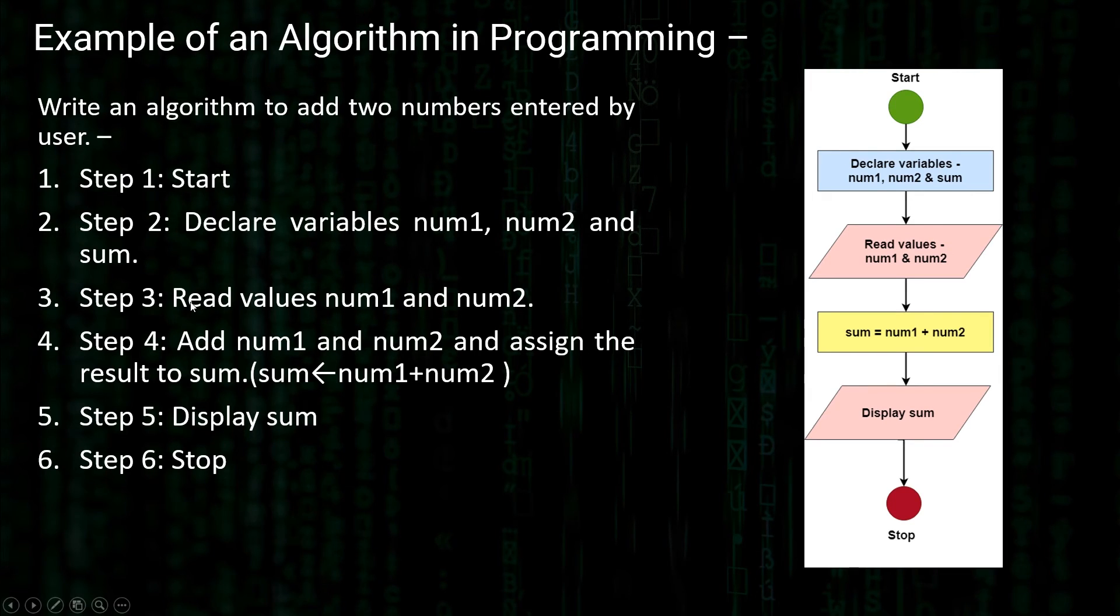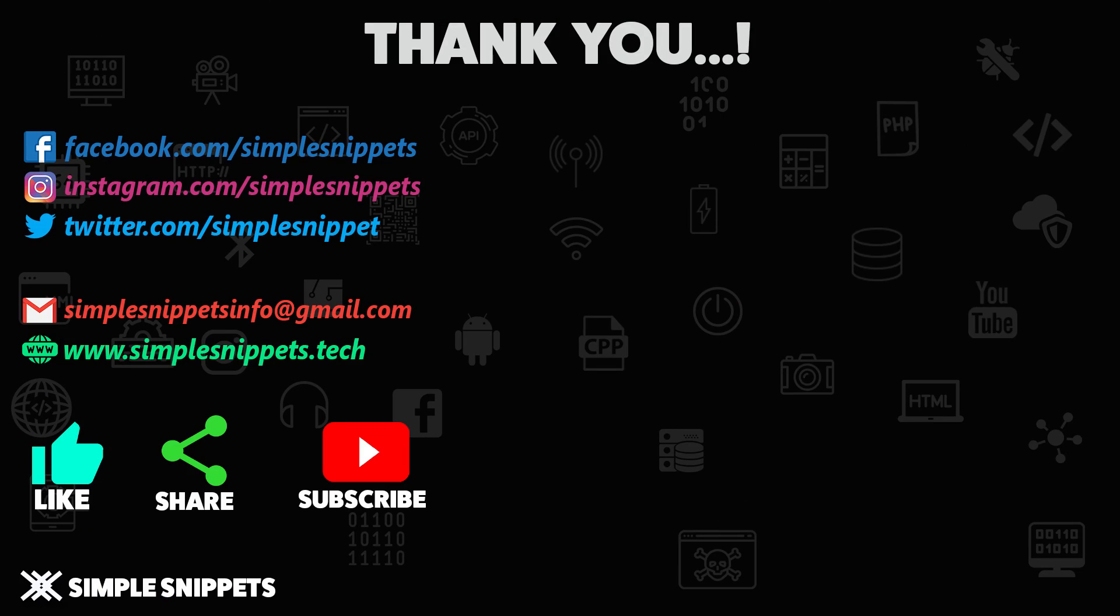This was a very easy example, but when we move on to complex programs, understanding the algorithm first, understanding the process first is going to be very important. Then implementing it in terms of programming is going to be very easy. This is the reason why algorithm is very important. I hope by now you've understood the term algorithm because we're going to be using this a lot as we move ahead. This was the basics of what exactly is an algorithm in terms of the real world as well as in terms of computer science and programming world.